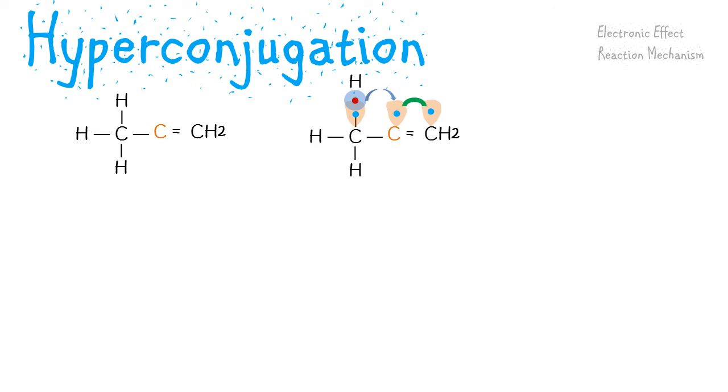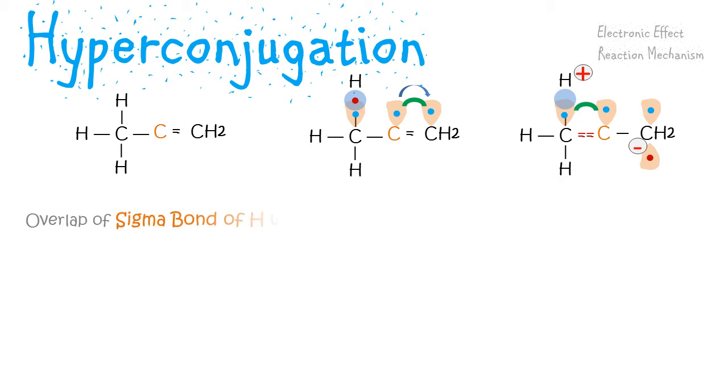Now the electrons here in the sigma bond jump to the pi bond and create resonance structures. And this overlap of sigma bond with pi bond creates the hyperconjugation effect.